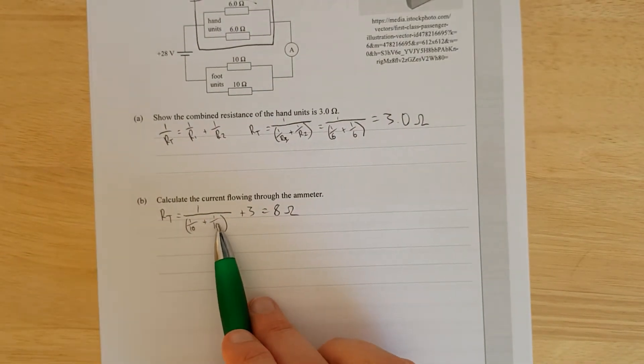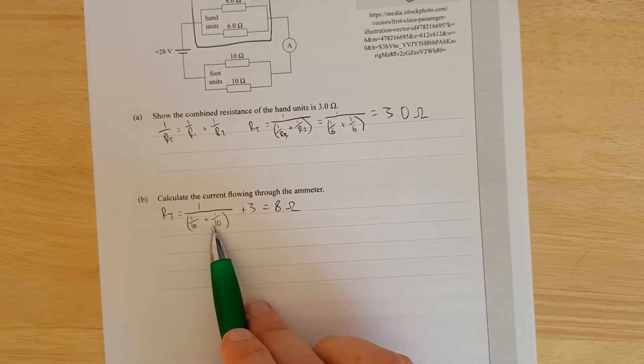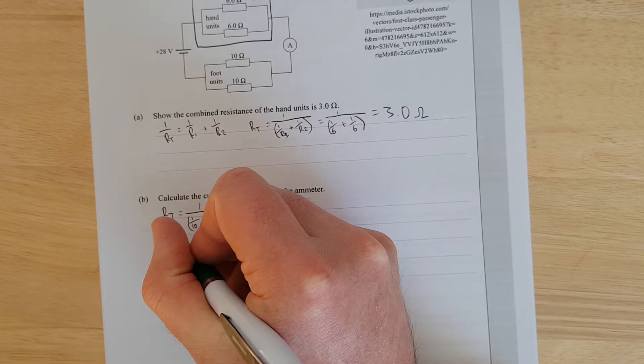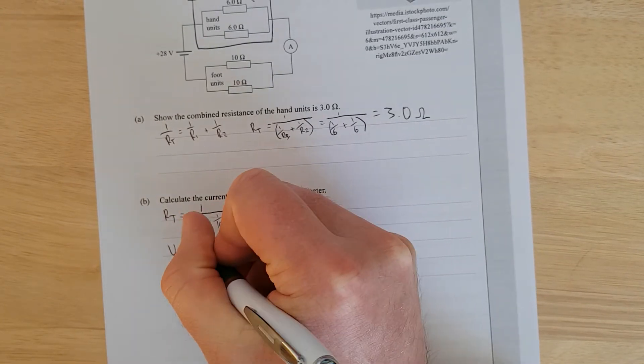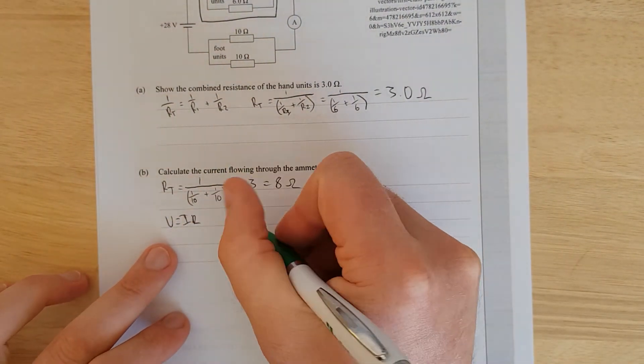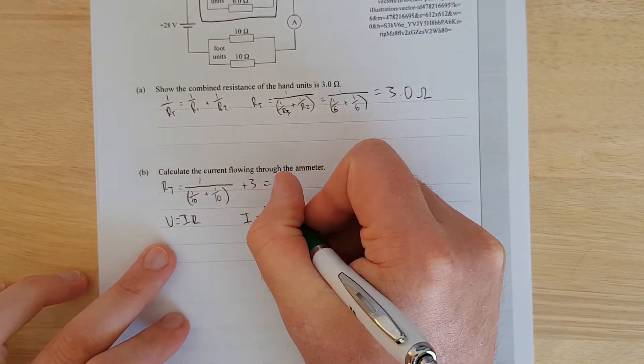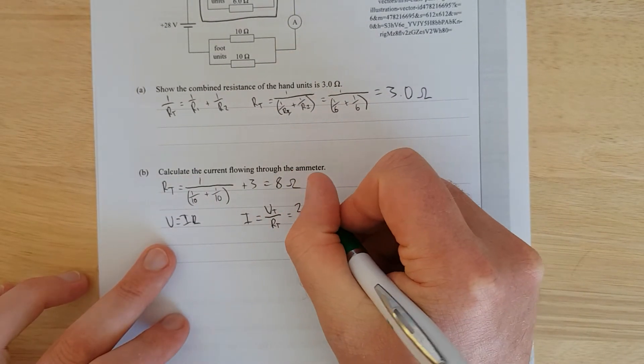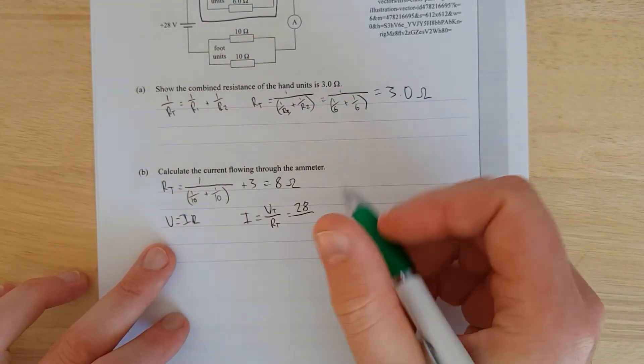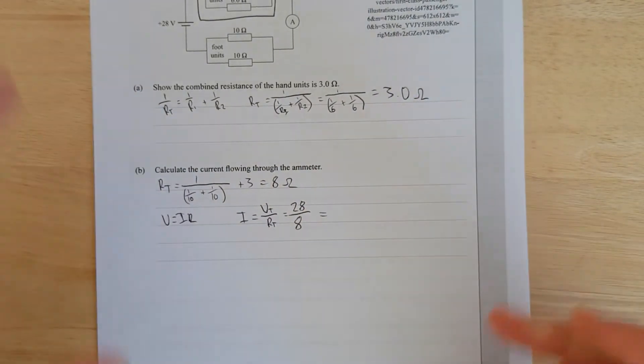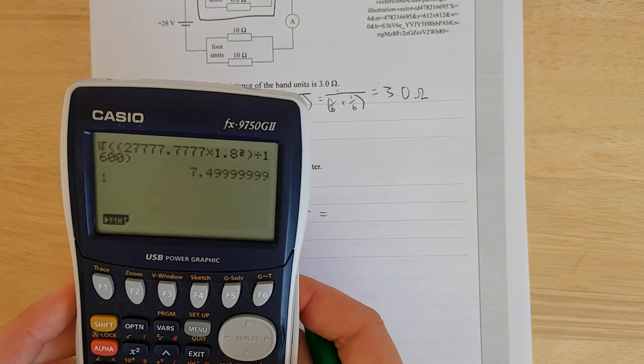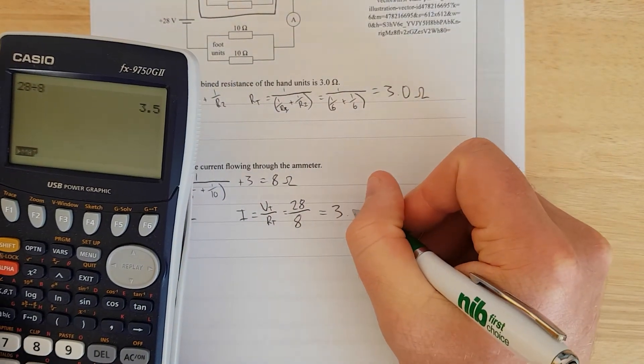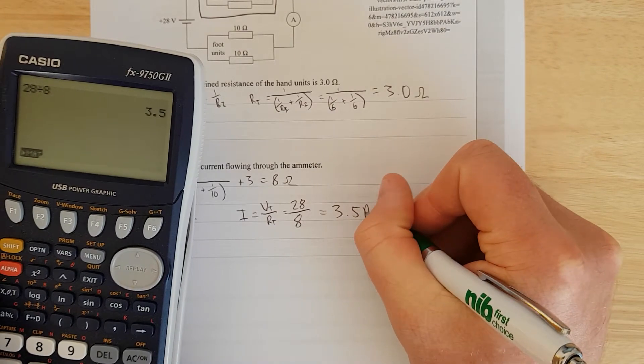Which equals 8 ohms. Because 1 over 10 plus 1 over 10 equals 2 over 10, which equals 1 over 5, then you flip that, which gives you 5 plus 3 is 8. Now we have V equals IR. The current is equal to V_total divided by R_total. So the total voltage is 28, and we divide that by the total resistance, which is 8. Let's do that in my calculator, 28 over 8 equals 3.5. 3.5 amps.